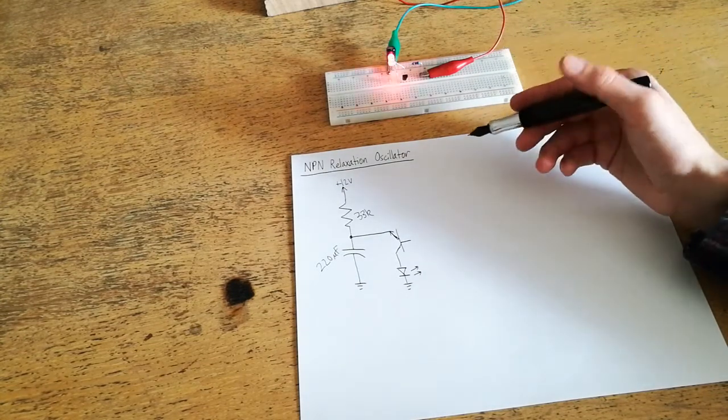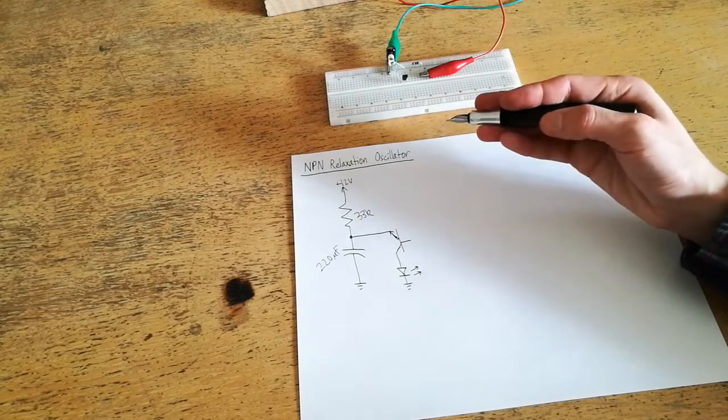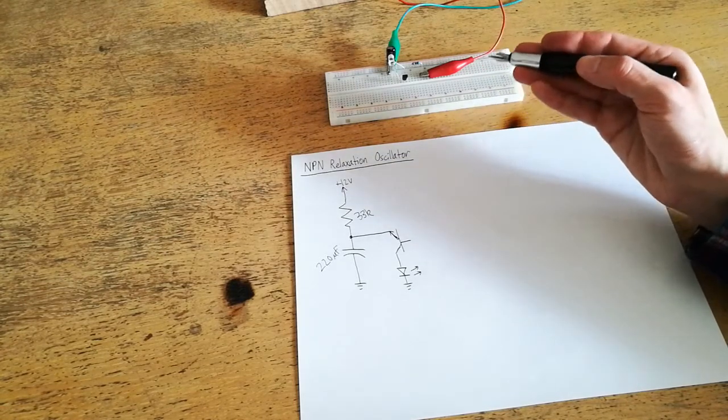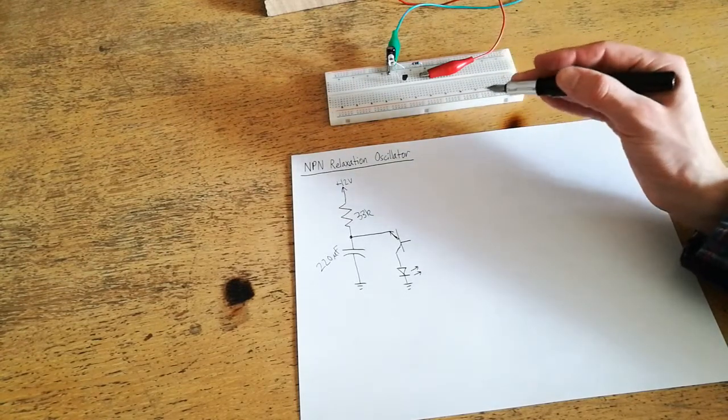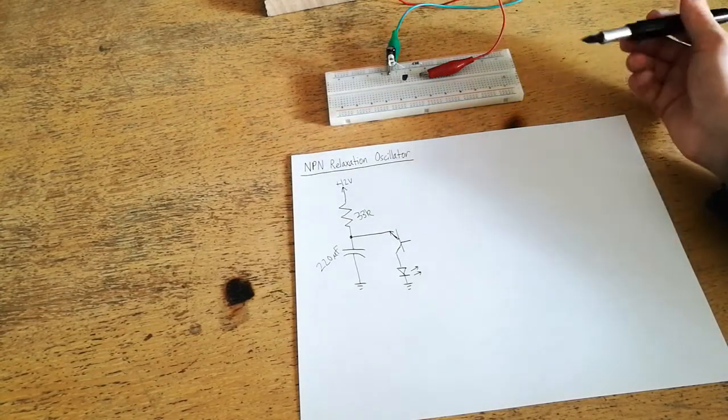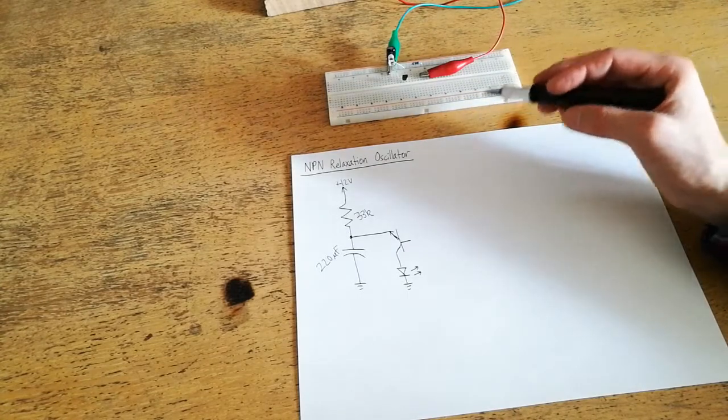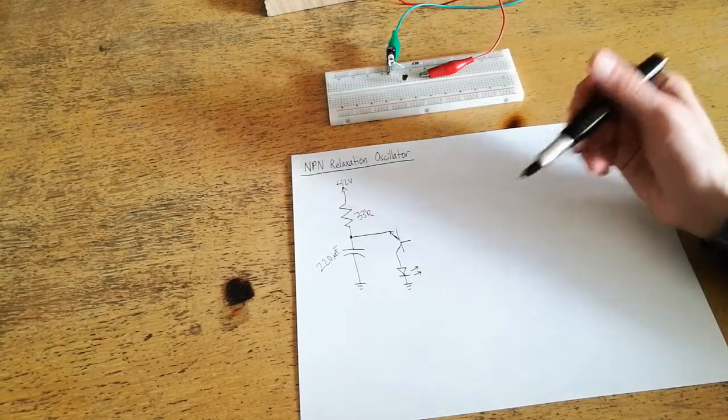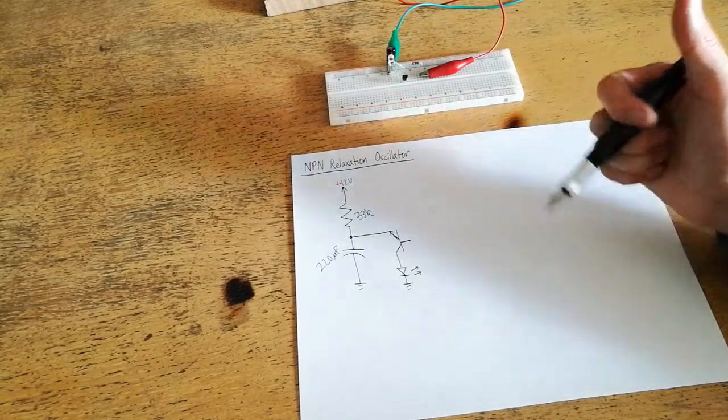So, the NPN relaxation oscillator, one of the strangest, weirdest circuits I've come across, and probably one of the cooler circuits I've ever come across. There it is, and this is basically how it works. So, hopefully you enjoyed this brief video on a simple but really interesting circuit, and I will see you in the next video. Thanks for watching.